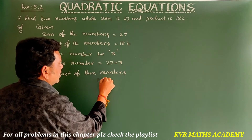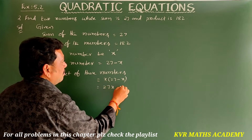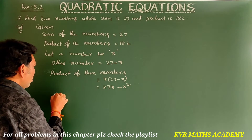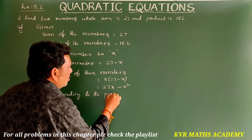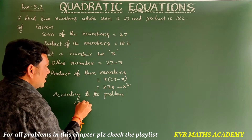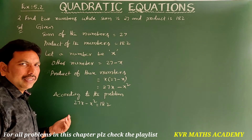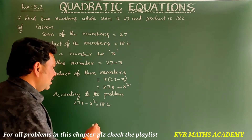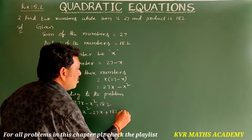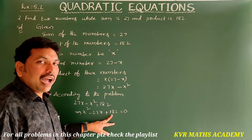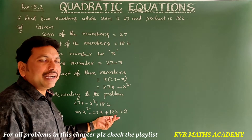According to the problem, the product of the numbers is x into (27 minus x), which equals 182. Expanding: 27x minus x² = 182. Transferring to the other side: x² minus 27x plus 182 equals 0.